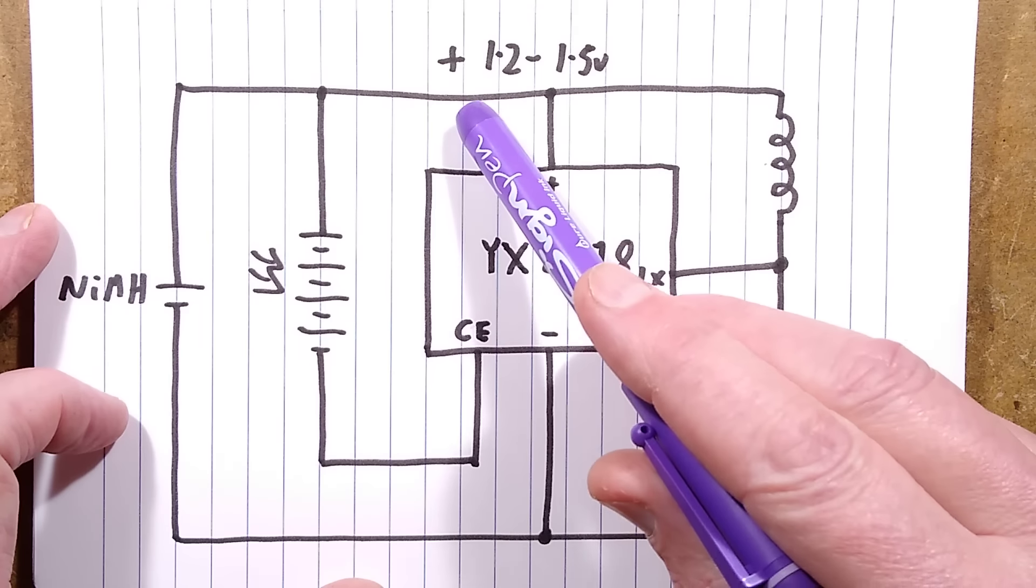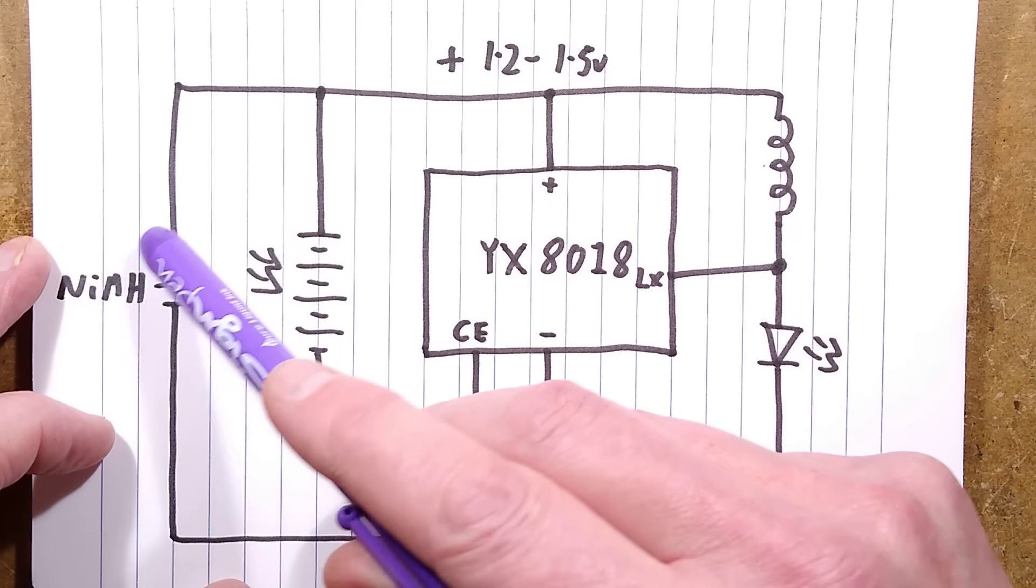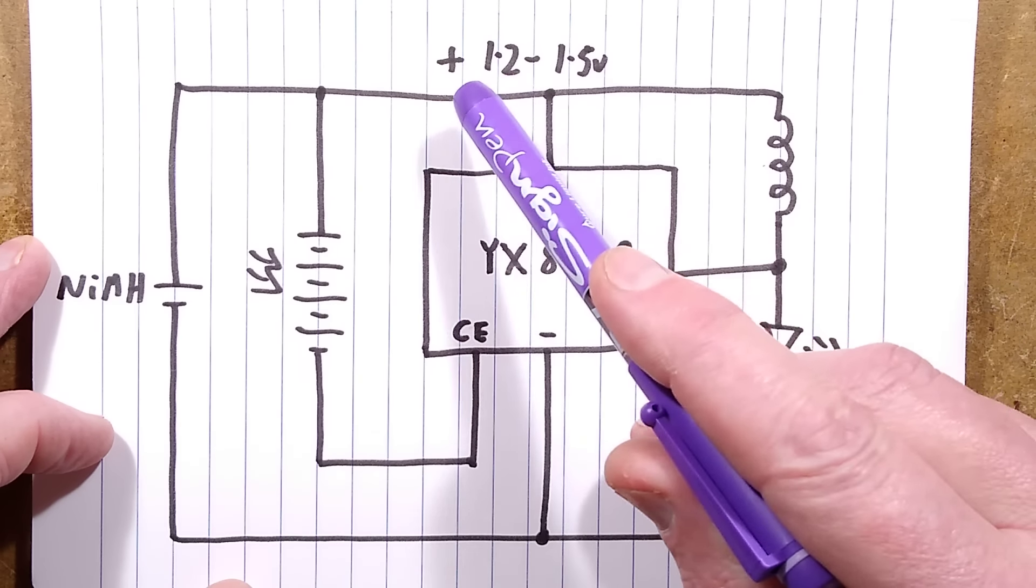When it is dusk, it then starts pulsing this inductor. Now, normally, the nickel metal hydride cell only has about 1.2 to 1.5 volts across it, and that is not enough to actually make the LED conduct, so it stays off.